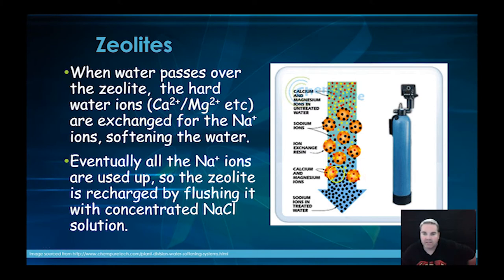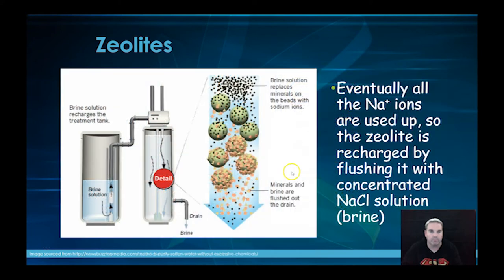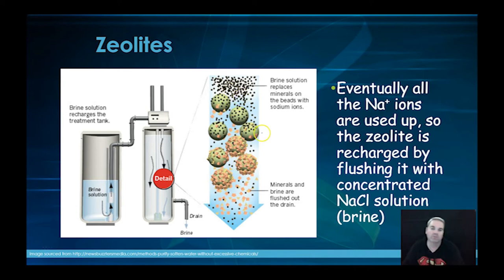Eventually the zeolites get completely coated with calcium and magnesium ions. So we stop the flow of normal water and put in supercharged brine — saturated sodium chloride solution. We saturate it with sodium ions to the point where it forces all the calcium and magnesium back out. We get rid of that salty water which now has the calcium and magnesium in it, and the sodium ions are back on the surface of the zeolite so we can soften water again. Here's what's shown: the zeolites with the calcium and magnesium on the surface, the new sodium ions coming in and replacing them so the zeolite can be used for water softening again.